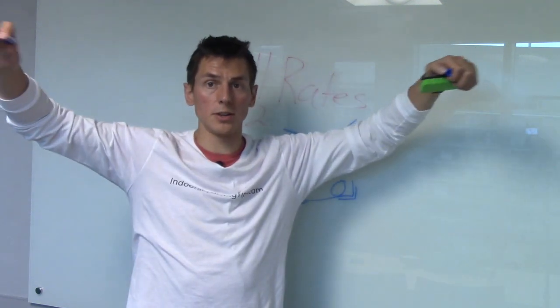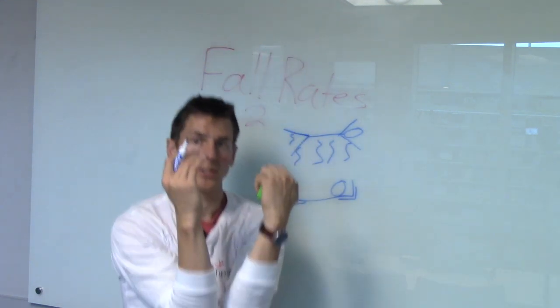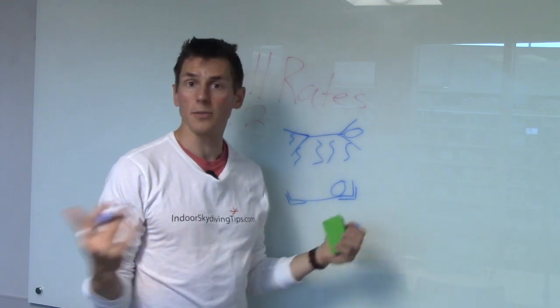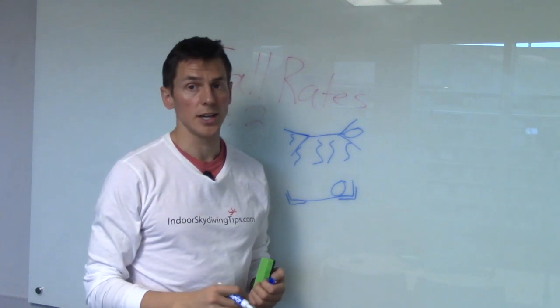So arms go from here closer together going down, down, down - basically you're just minimizing the surface area of your body to increase your fall rate or to drop down inside the tunnel.